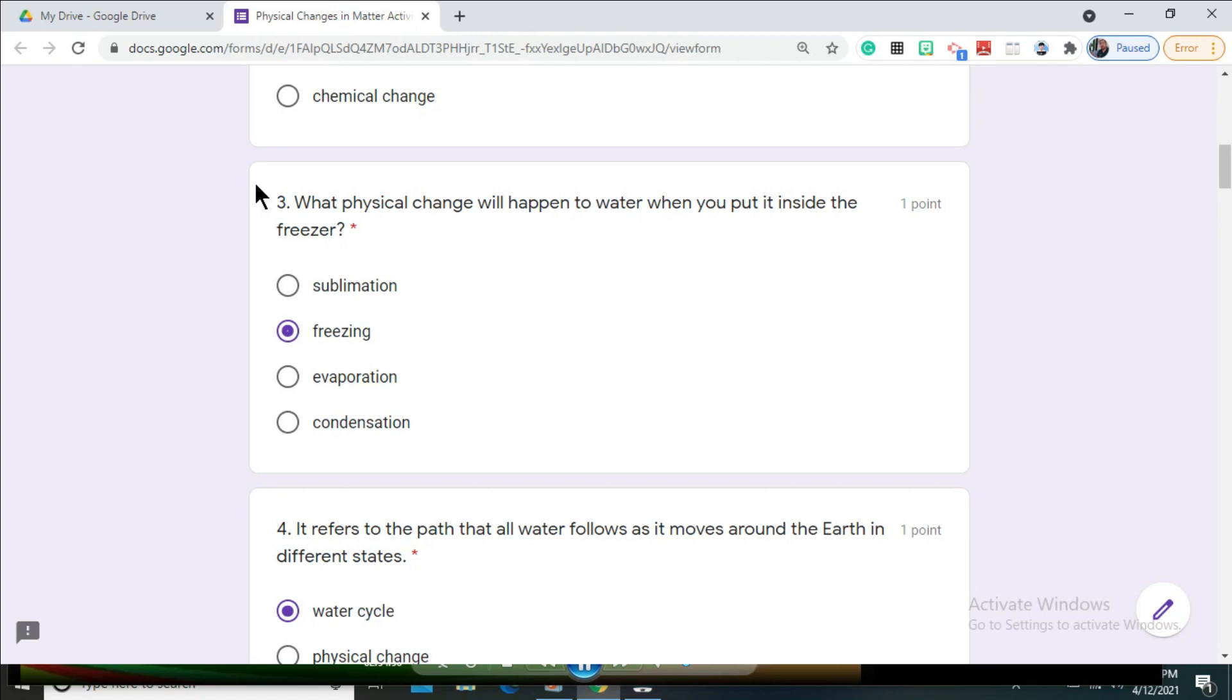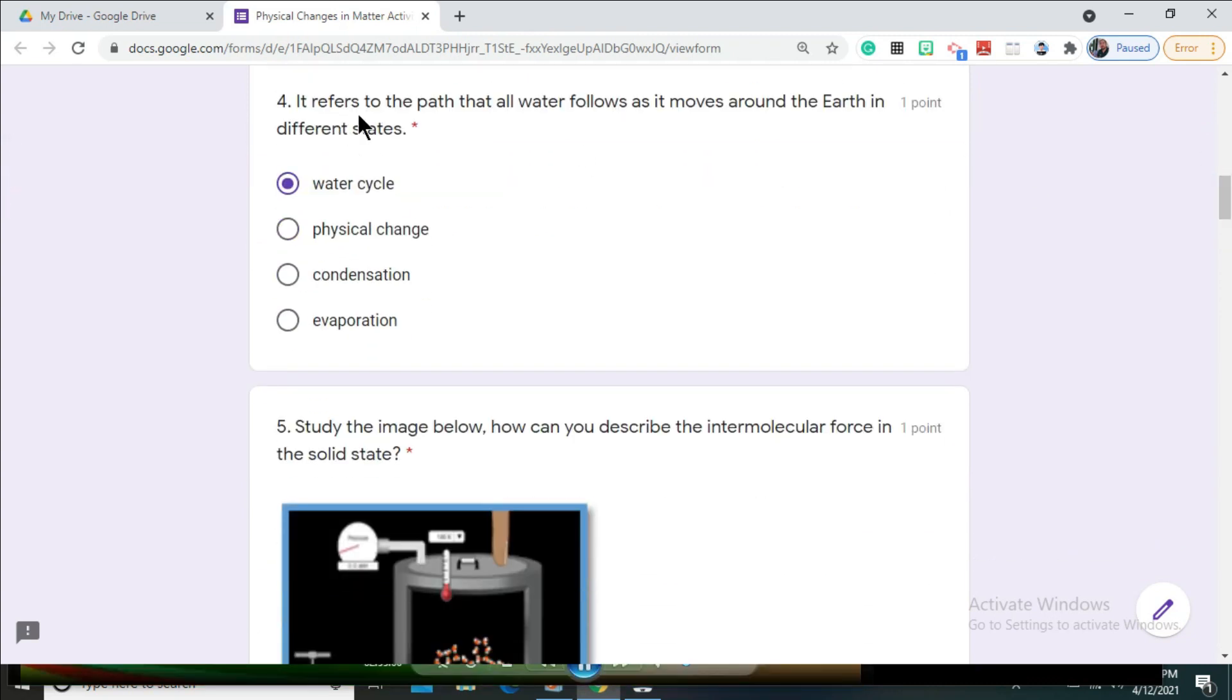Question number three: what physical change will happen to water when you put it inside the freezer? The correct answer is freezing. Question number four: it refers to the path that all water follows as it moves around the earth in different states.